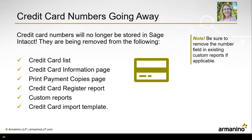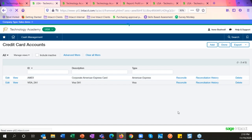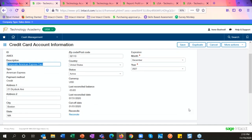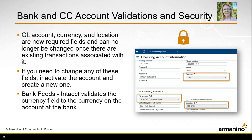Now let's talk about cash management enhancements, and we'll jump into Intact. Under cash management, setup, credit cards — Intact has removed the credit card numbers associated with credit cards. If you had previously entered your credit card number, you'll notice that it's completely gone. Intact removed the credit card number from Intact completely and is no longer requiring it. Note that it is also gone from any payment copies pages and the credit card register report. If you have any custom reports with the credit card custom field, you'll want to go in and remove that field as it will now be blank.